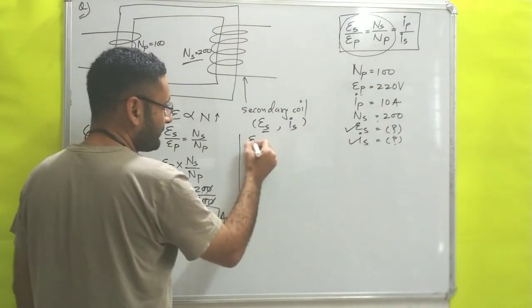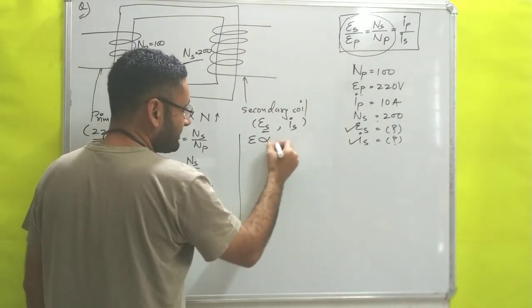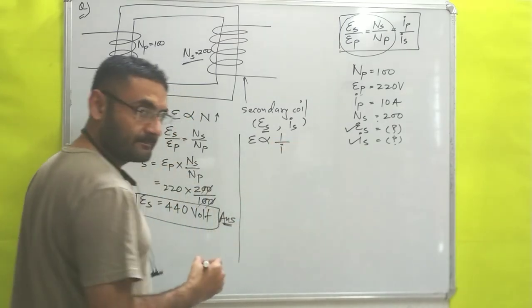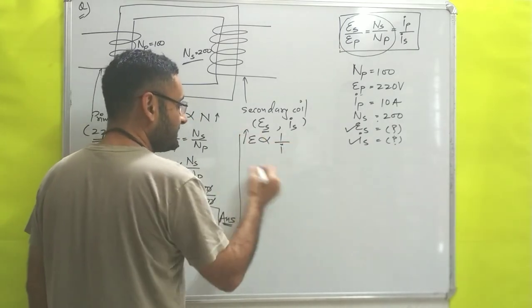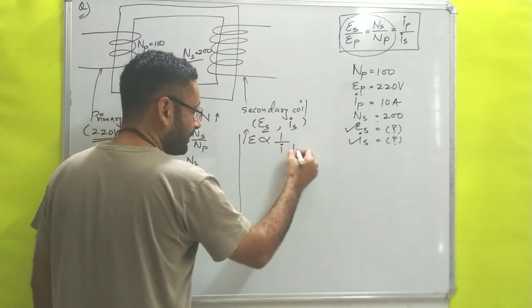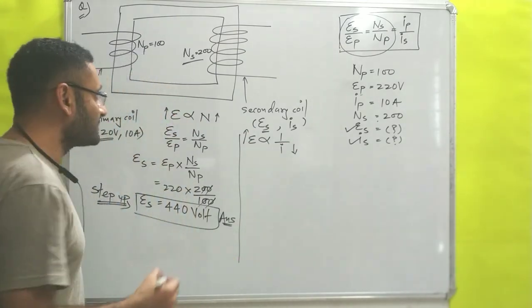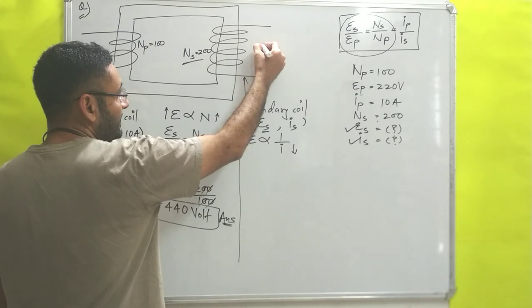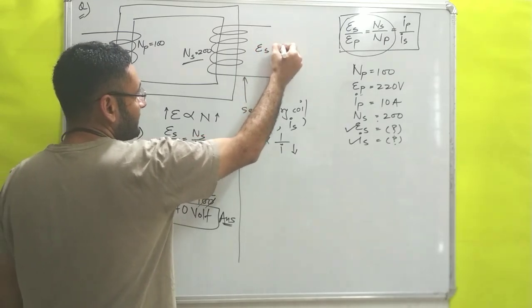EMF is inversely proportional to current — that means if you increase the EMF, the current will decrease.